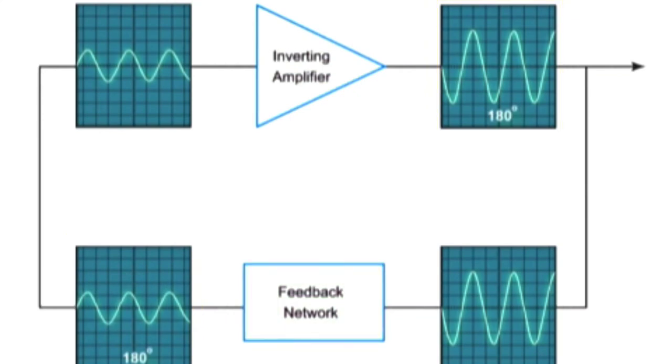Thus, maintaining the phase state is accomplished by a 360 degree change in the phase as a result of the 180 degree signal inversion at both the inverting amplifier and the phase shift network.